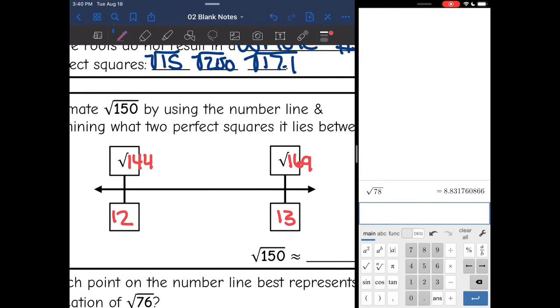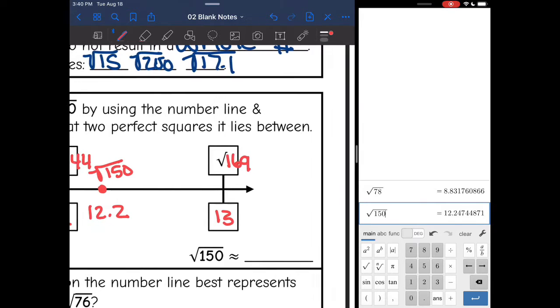And 150, square root of 150 is closer to square root of 144. So I'm going to put that here. So I know that this number is going to be between 12 and 13, but it looks like it's closer to 12. So I'm going to say about 12.2, and I'm going to use the calculator to verify. The square root of 150, yes, it is about 12.2.